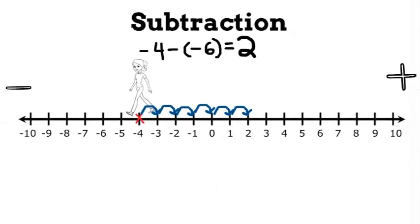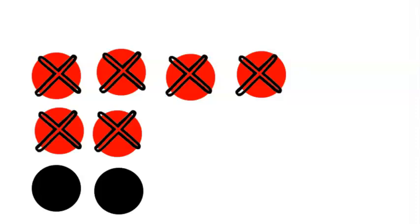Let's look at the red and black chips. We start with negative 4, and we want to take away negative 6. But we only have 4 to take away, so we need to add two zero pairs so that we'll have enough to take away six red chips. Once we take them away, we get two black chips, so our answer is positive 2.